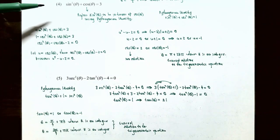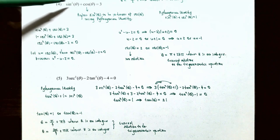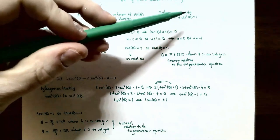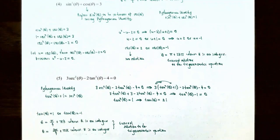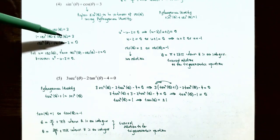Number 4: solve sine squared theta plus cosine theta equals 3. This time the cosine function is the linear term (first power), so we replace sine squared theta using the Pythagorean identity: sine squared theta equals 1 minus cosine squared theta. Substituting: 1 minus cosine squared theta plus cosine theta equals 3. Now the entire equation involves only cosine of theta.